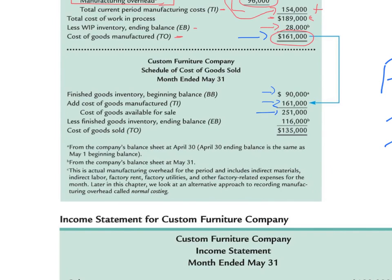Of the $251,000 cost of goods available for sale, we either sold those goods or we still have them in inventory. The ending balance of $116,000 represents what was still in ending inventory at the end of the period. Subtracting that from $251,000 tells us that goods costing $135,000 were actually sold. That cost of goods sold figure is what we are ultimately trying to determine with these three schedules, and it goes directly into the income statement.